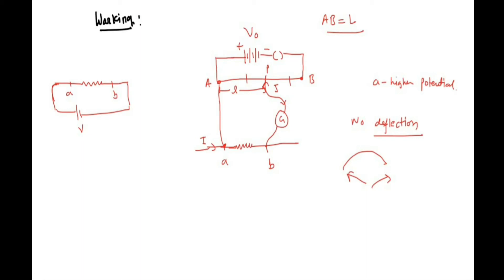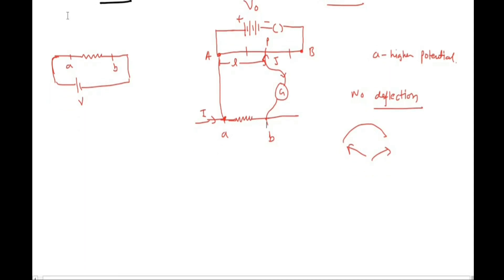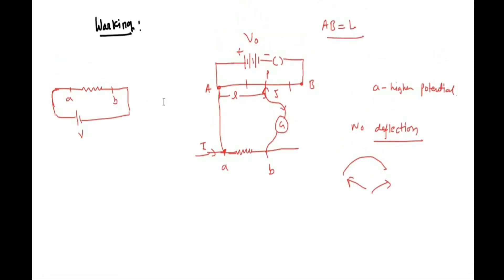Since no current is flowing, as explained at the beginning, point A of the circuit and point A of the potentiometer are at the same potential, and point B and point P are at the same potential. That is why no current flows in the galvanometer. This means the potential between A and P equals the potential between points A and B, which we call V.